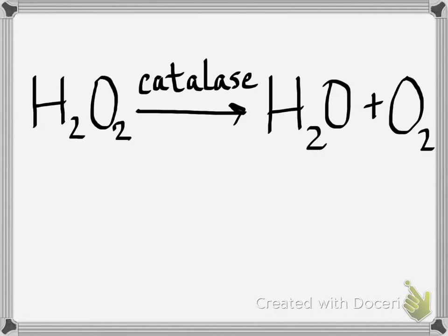We're supposed to be able to identify the reactants and identify the products in a chemical reaction. In this reaction, the reactant is H2O2 — I'm putting an R above it. The products are water and oxygen — I'll put a letter P above them.